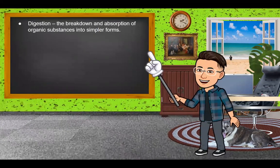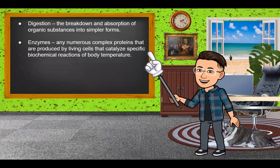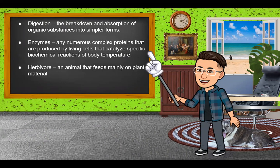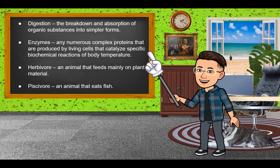Next, we have digestion — the breakdown and absorption of organic substances into simpler forms. Enzymes are complex proteins produced by living cells that catalyze specific biochemical reactions in the body. We also have herbivore, which is an animal that feeds mainly on plant material. And last is piscivore, which is an animal that eats fish.